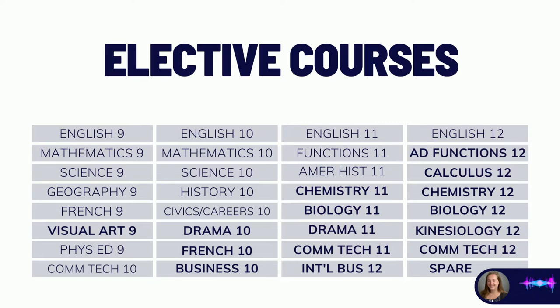As students enter grade 11 and grade 12, there is a lot more flexibility in terms of electives available to them. All the courses bolded in the chart are the elective options the student is selecting. Once a student enters grade 12, they have full range of elective possibilities, as there is only one required course — English. Outside of that, they can select electives based on their post-secondary goals and interest areas.